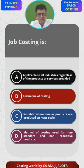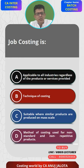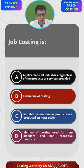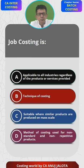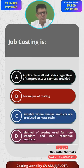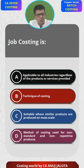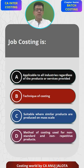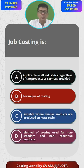Option A says it is applicable to all industries regardless of products or services offered — that is not correct. If it is going to be only one type of article, then they will follow unit costing. If companies manufacture products in different stages, they follow process costing. If companies are in the service sector, they follow operating costing. So A cannot be the answer.